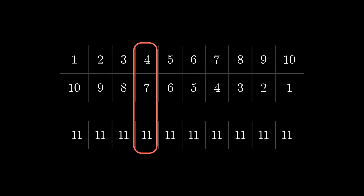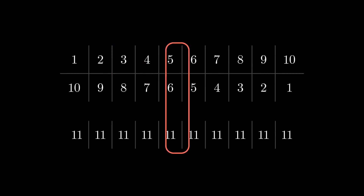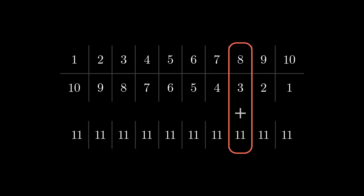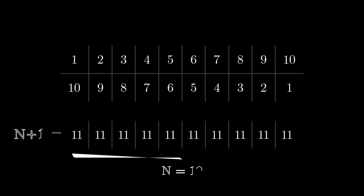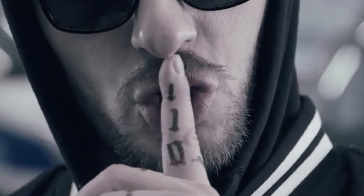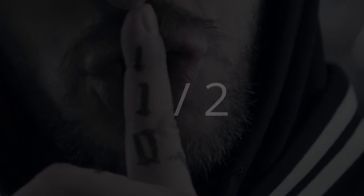This sum equals the amount of numbers we want to add together plus 1. If we were to calculate 11 plus 11 plus 11 etc., this would yield the same result as simply calculating 10 times 11, the number of pairs multiplied by the common sum. However, we still need to divide our result by 2, as we have added every number from 1 to 10 twice.